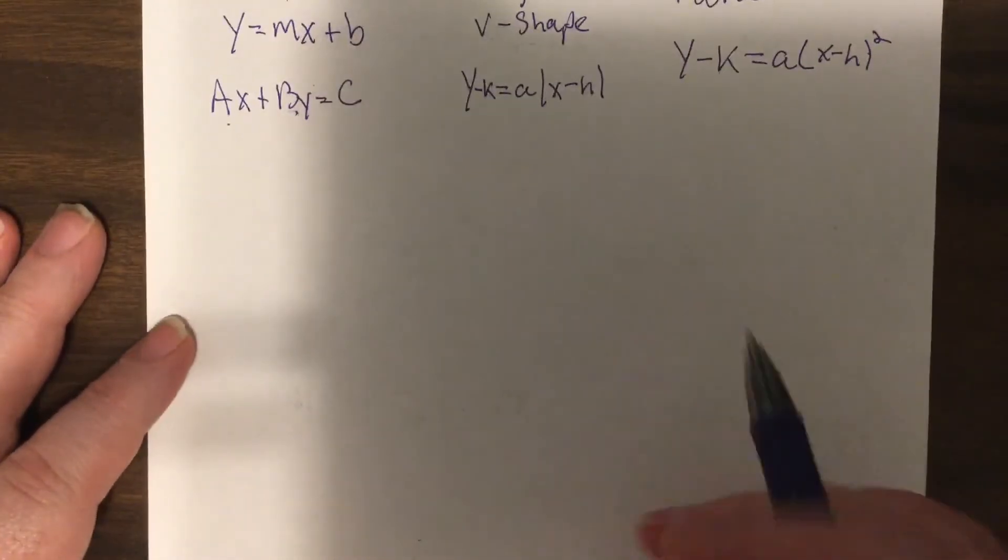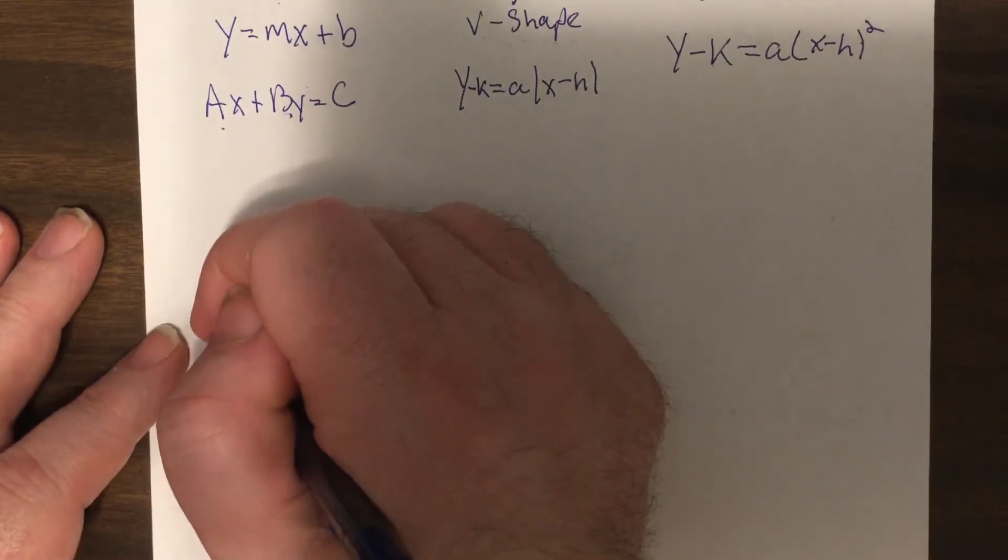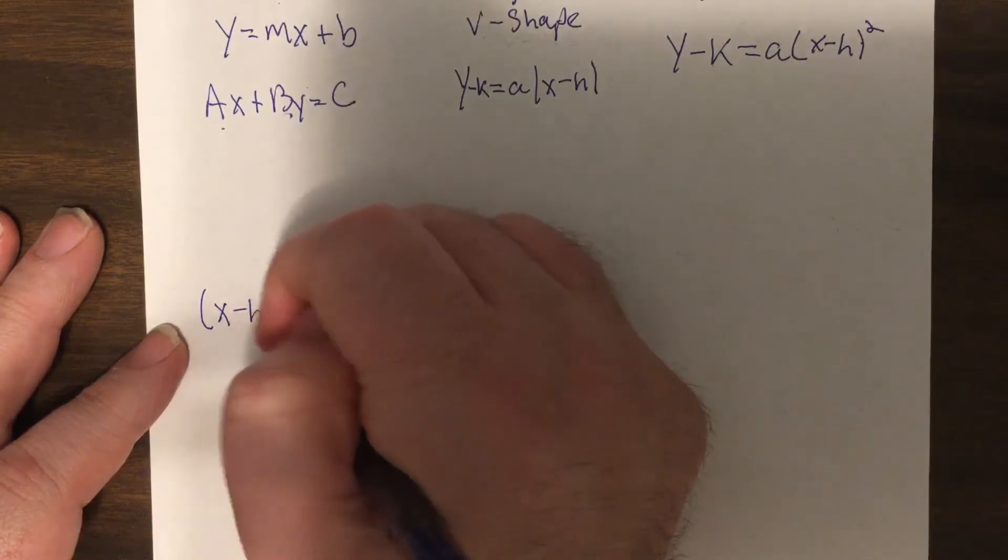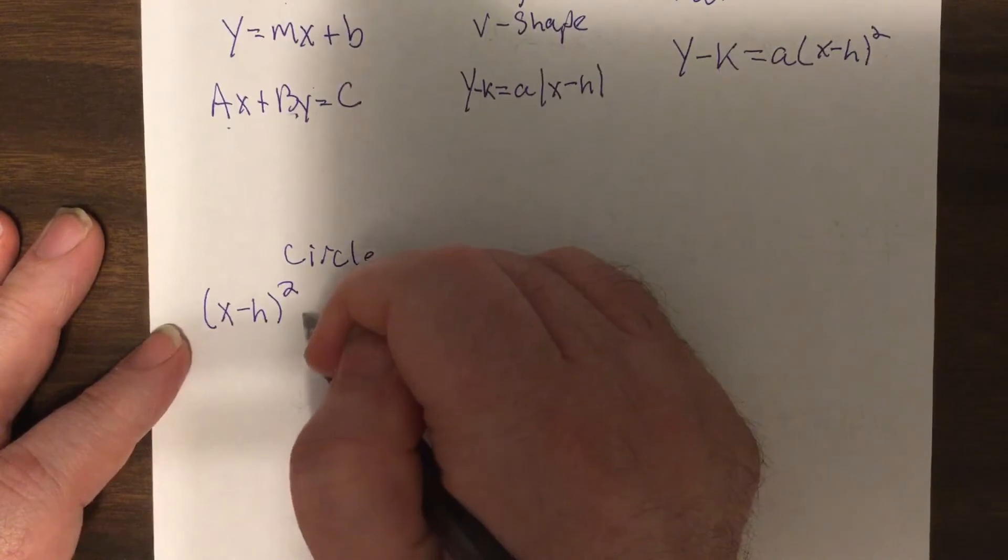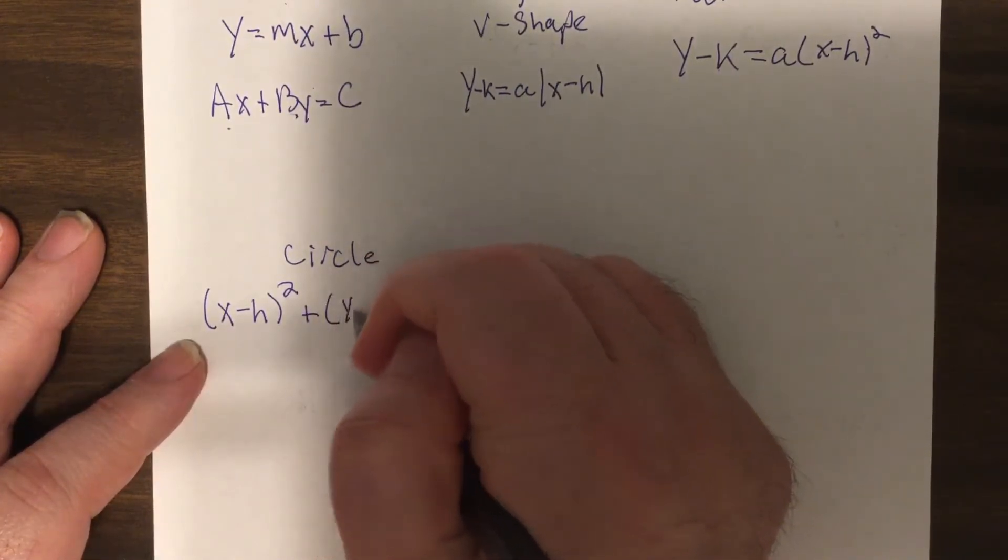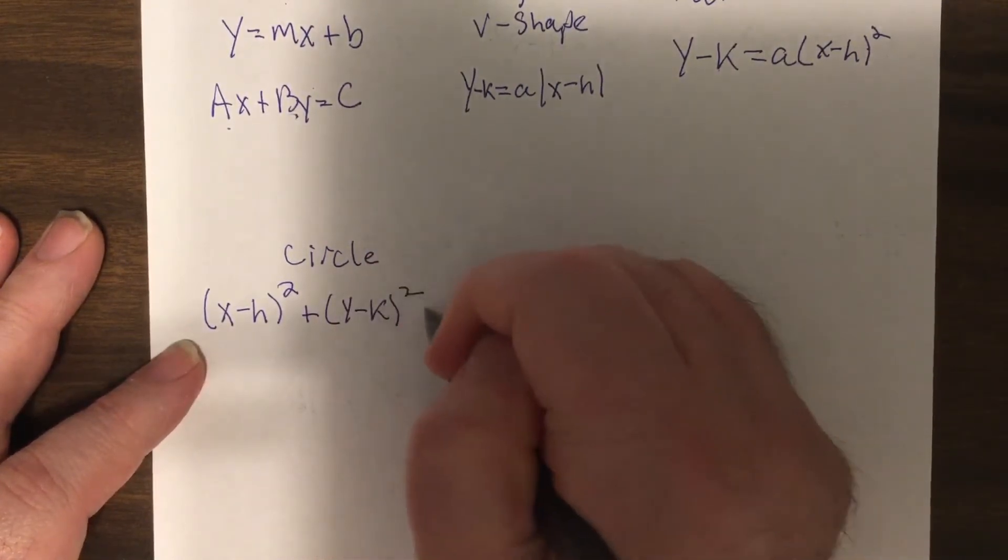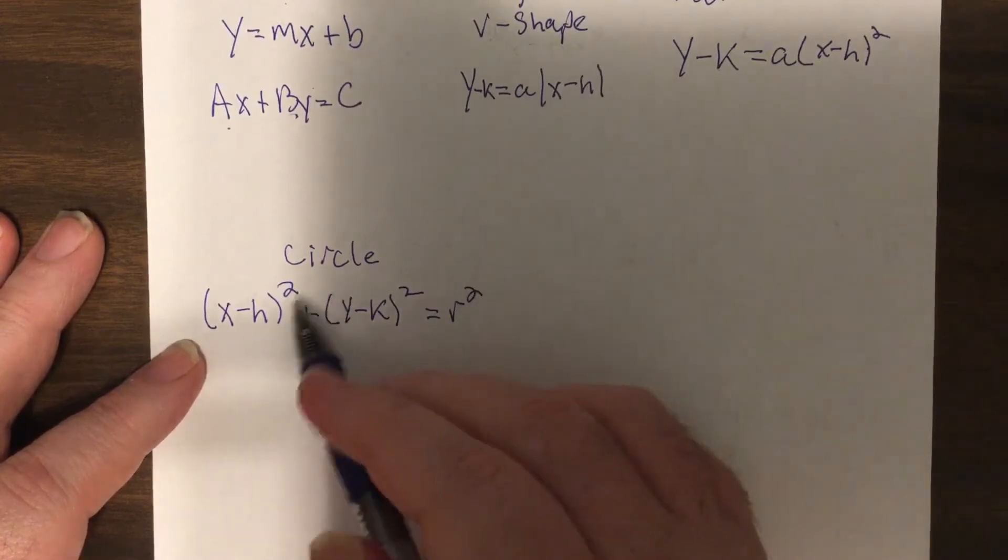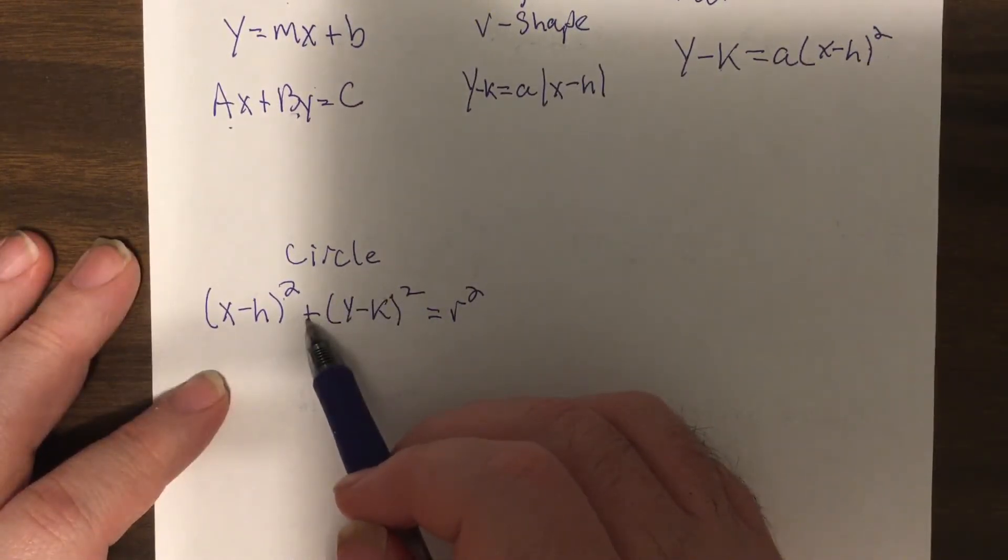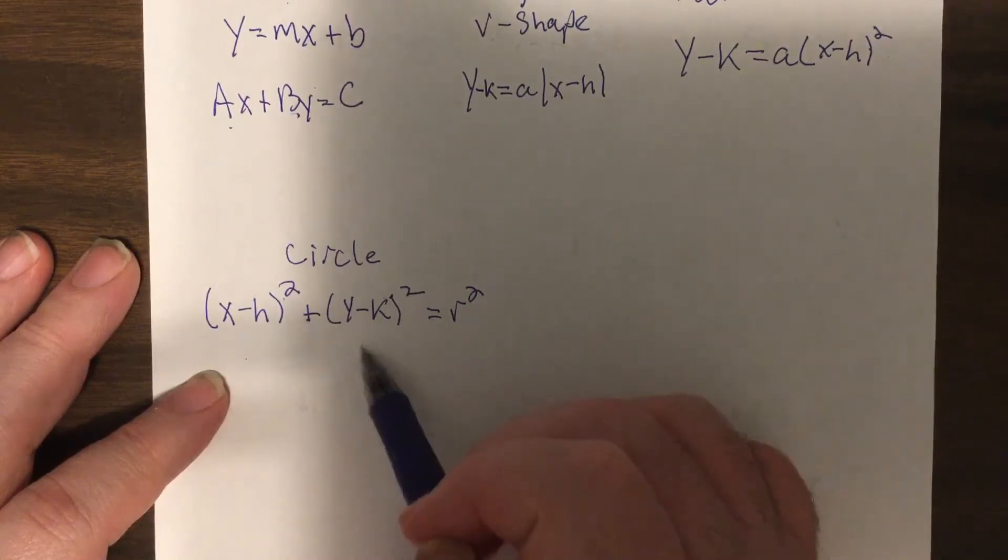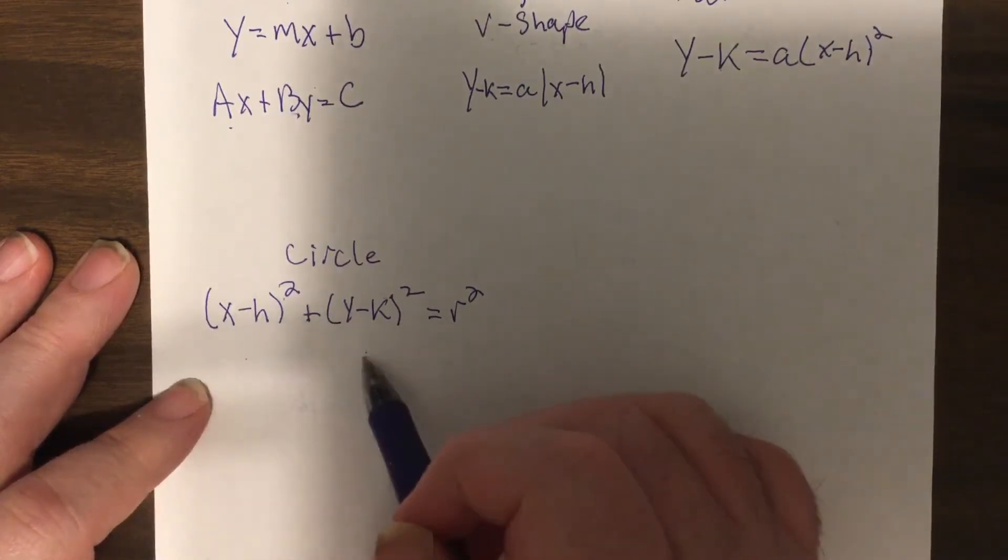Then we have the circle. And the key to a circle is that both are squared. You're adding them when they're on the same side, and it's the same denominator or coefficient.